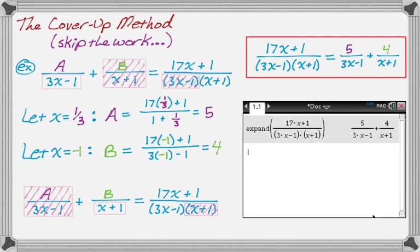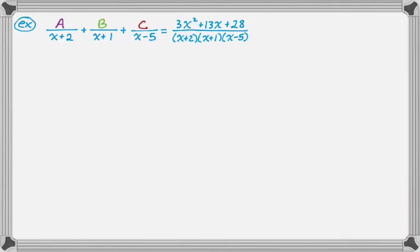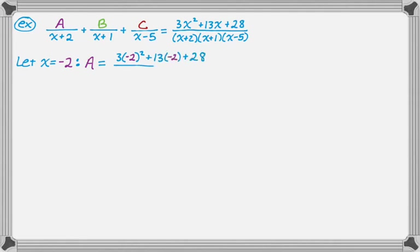Now a more complicated example with three parts: A over (x plus 2) plus B over (x plus 1) plus C over (x minus 5) equals a given expression. To solve for A, I let x equal negative 2 (the zero of x plus 2), cover up the x plus 2 on the right-hand side, and substitute negative 2 for every remaining x. Working that out gives A equals 2. If you forget to cover it up, you'll suddenly find yourself dividing by zero — that just means you forgot.